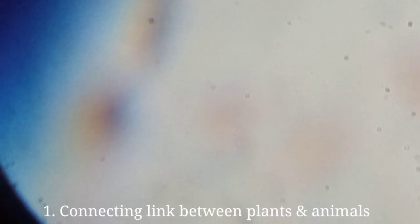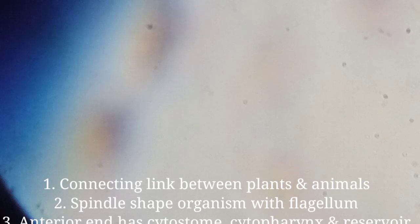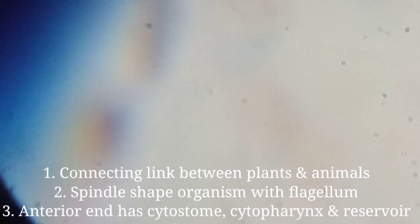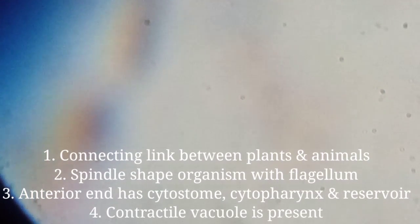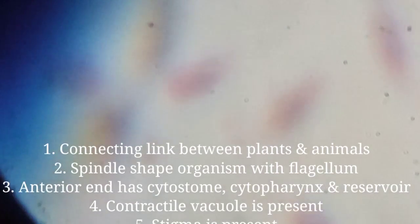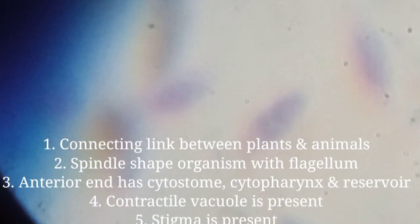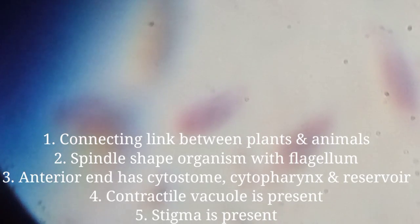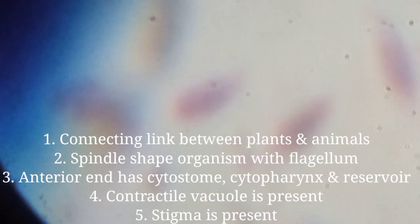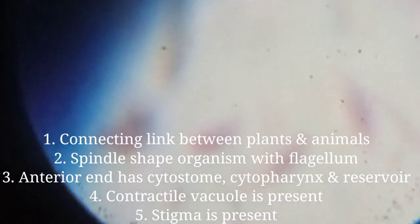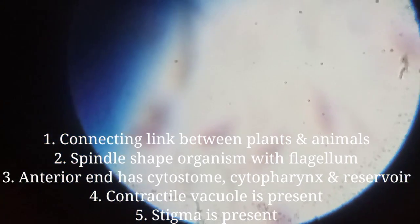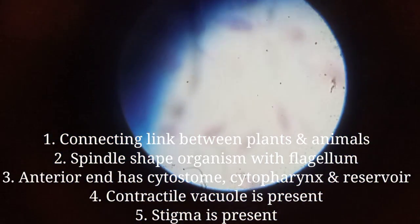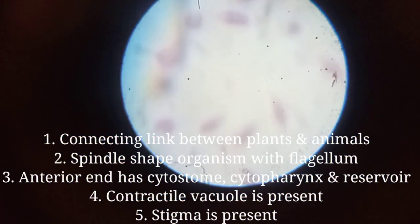Identification characters: Euglena is a connecting link between plants and animals. It is a spindle-shaped organism with a flagellum. The anterior end has a cytostome, cytopharynx, and reservoir. Contractile vacuole and stigma are present.